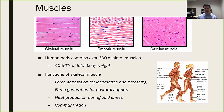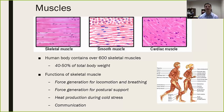Muscle is also an important metabolic tissue such that we can create heat when we are cold. If you have ever wondered why when you get cold you shiver, what that is is essentially just the muscles contracting over and over again to increase heat production and warm your body. And the tongue is a muscle, so we can use that to communicate.